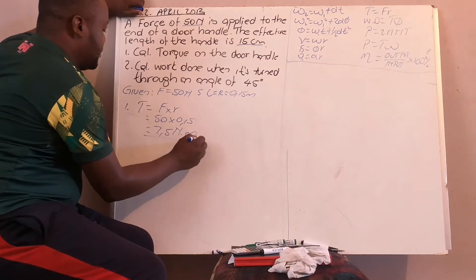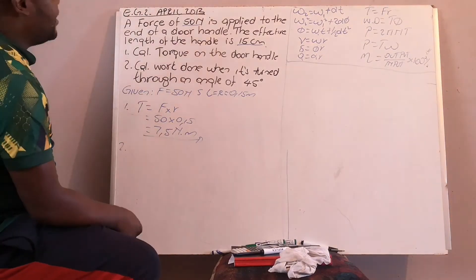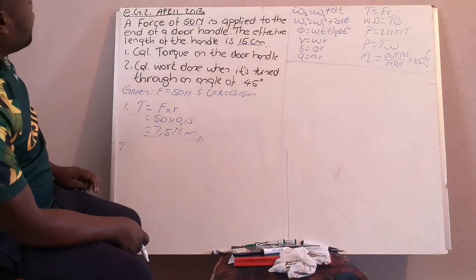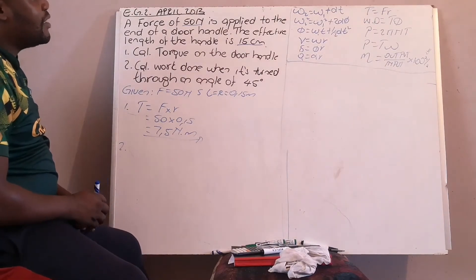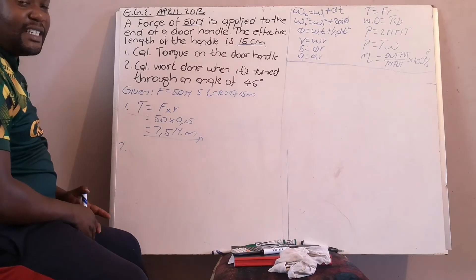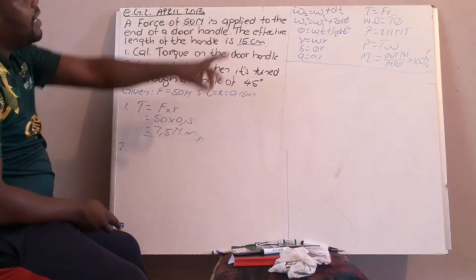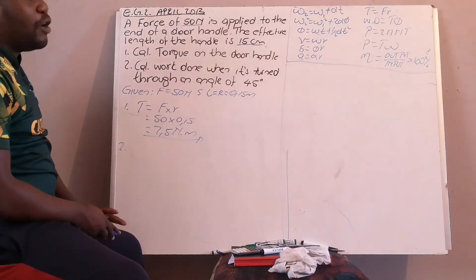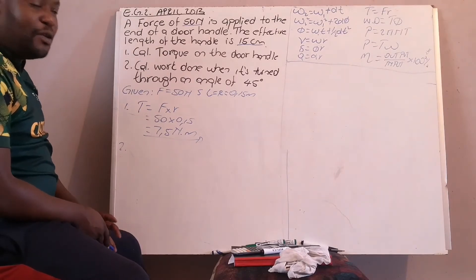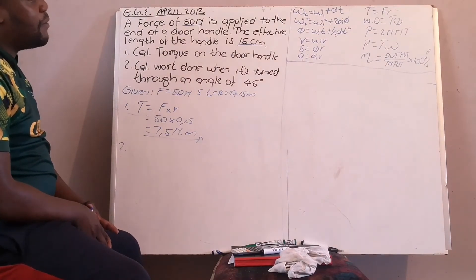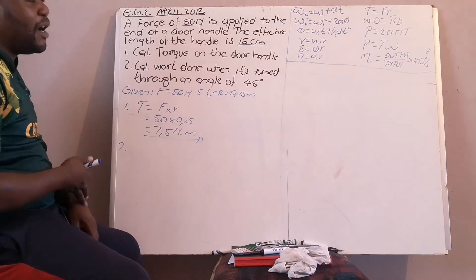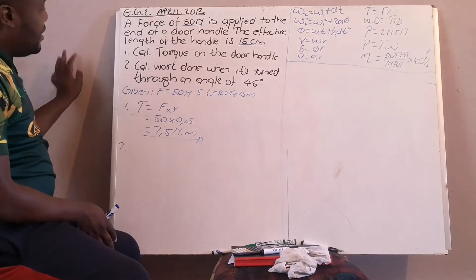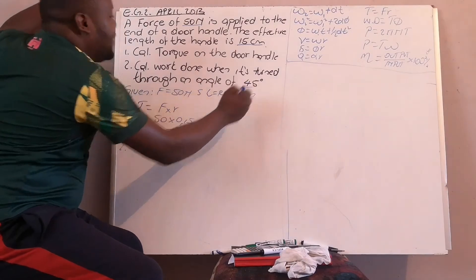Number two, they want you to calculate your work done. In angular motion, here is your equation for work done: torque multiplied by angular displacement. To calculate your work done, you must have your torque, which you already have, and you must have your angular displacement. The angle is 45 degrees.